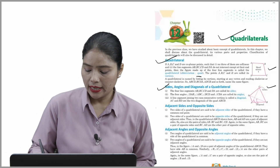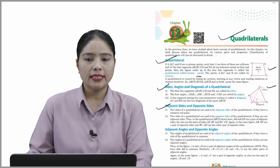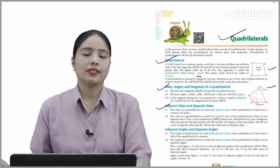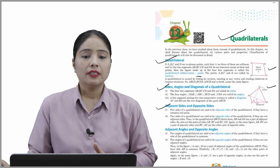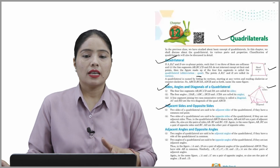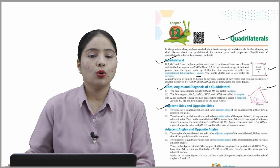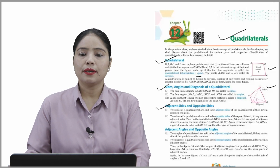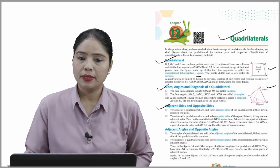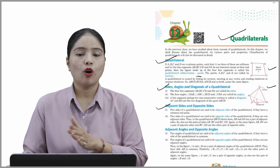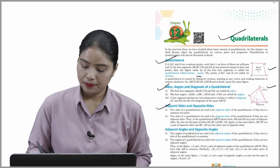Now, adjacent sides and opposite sides of a quadrilateral. Two sides of a quadrilateral are said to be adjacent sides if they have a common endpoint. Two sides are said to be opposite sides if they are not adjacent. In quadrilateral ABCD, AB and AD are a pair of adjacent sides; similarly AB & BC, and BC & CD are also pairs of adjacent sides. AB and DC are a pair of opposite sides, and BC and AD are the other pair of opposite sides.